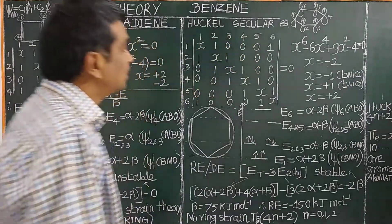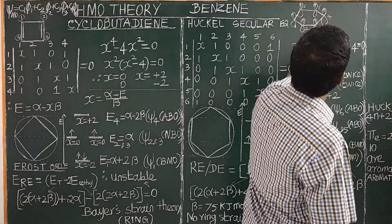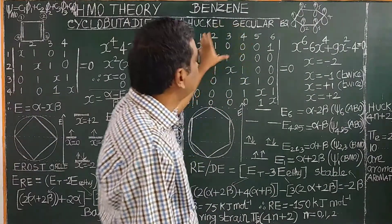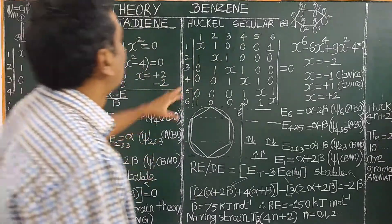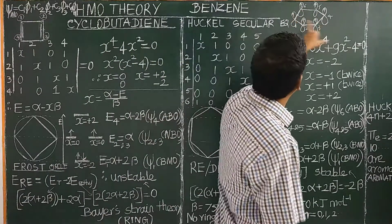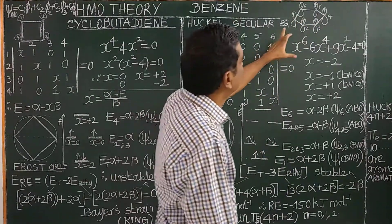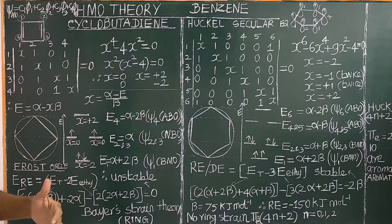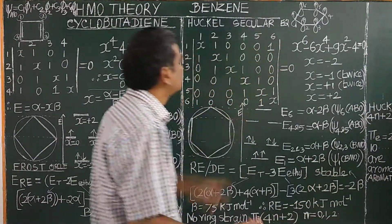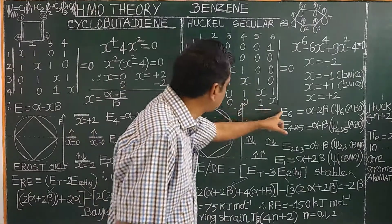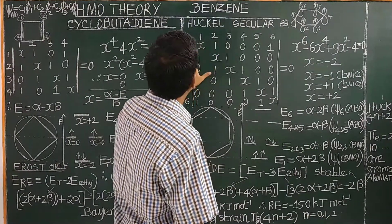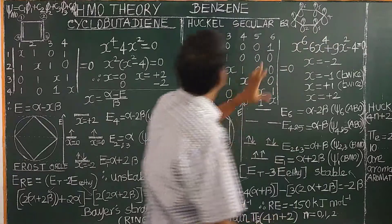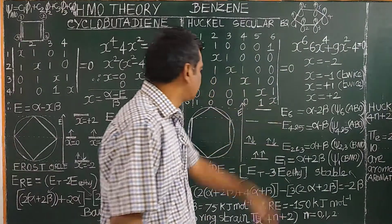Let us now study benzene. Benzene consists of six carbon atoms, and each carbon atom has one unhybridized 2pz orbital. The secular equation is constructed similarly — you set up a 6×6 matrix with rows and columns 1 through 6. Here, 1 and 6 are adjacent carbon atoms because benzene is a cyclic compound; if it were linear, 1 and 6 would be zero. All diagonal elements are set to x, and all adjacent pairs are set to 1, while non-adjacent pairs are 0. All matrix elements are built up accordingly.